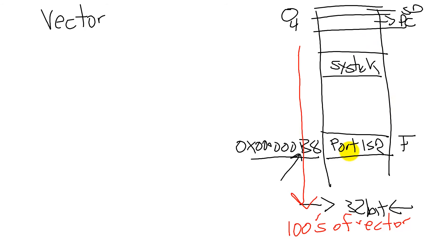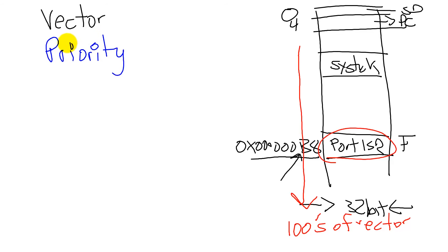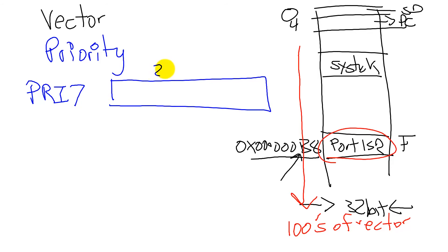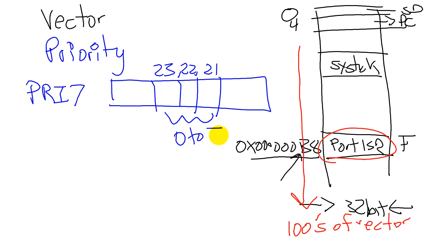There are hundreds of vectors, and the one we're interested in is the Port F interrupt service routine. For each interrupt available on the launchpad, there is a corresponding entry in the interrupt vector table that tells the system what interrupt service routine to run when that particular interrupt occurs. Next, let's talk about priority.